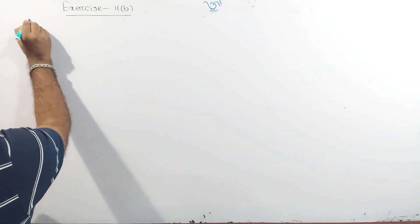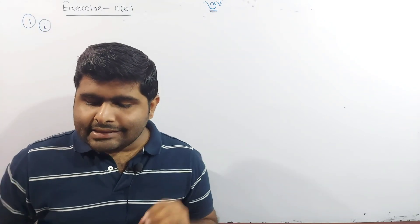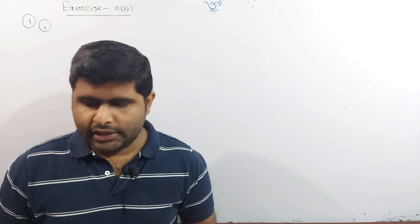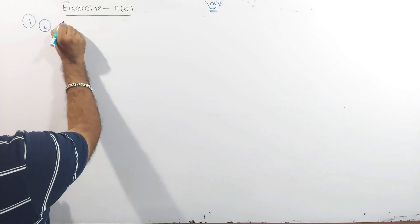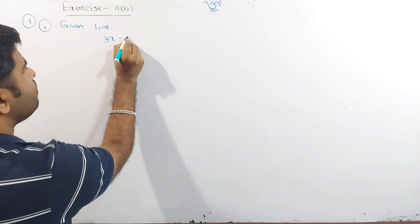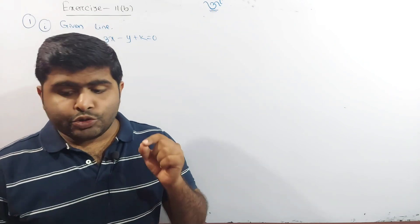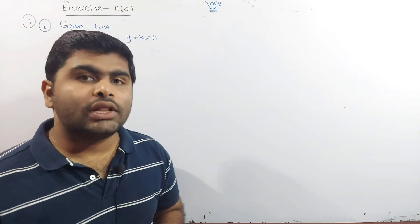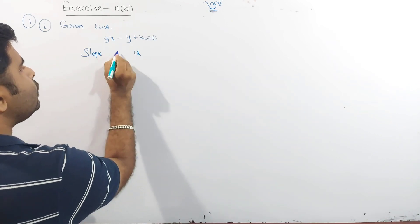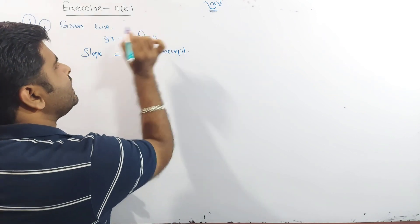Question number 1, bit number 1. The slope and x-intercept of the line 3x minus y plus k equal to 0 are equal. Given line: 3x minus y plus k equal to 0. Slope and x-intercept are equal. What is the value of k?